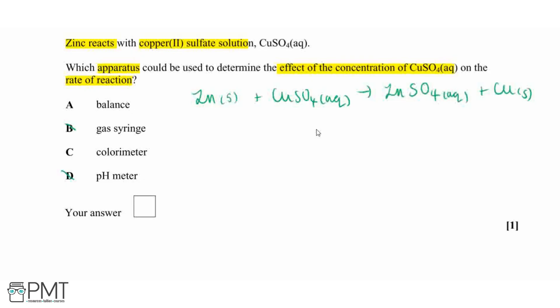And because we're not producing any gases, which can then be released, we're also not going to see any change in mass in this reaction because nothing is going to be able to escape our system. Therefore, we can't use a balance.